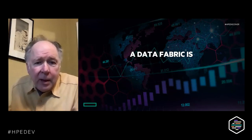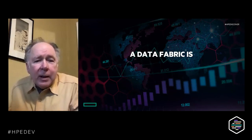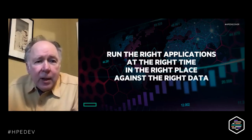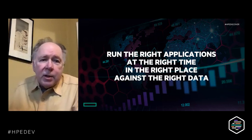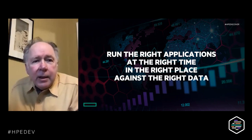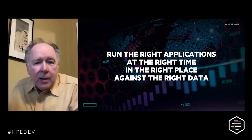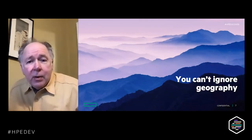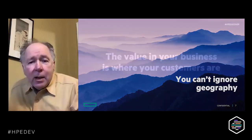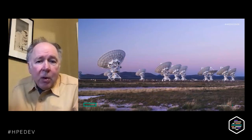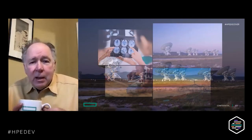Commonly, what a data fabric does — I think that's a better way to define something — is something that allows you to run the right applications, at the right time, in the right place, against the right data. It does the data side of that. Data doesn't happen in a data center anymore — well, it does, but it's not exclusive. You can't ignore the fact that things happen around the world, from medicine, finance, energy, and science, all in many, many places.